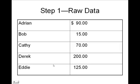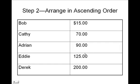First of all, get data. You can see that the data is not arranged in any particular order — I just threw some data down. Next, arrange the data from the lowest income earner to the highest income earner.